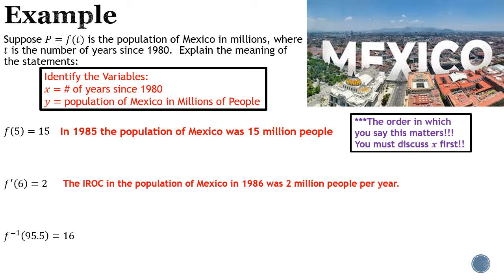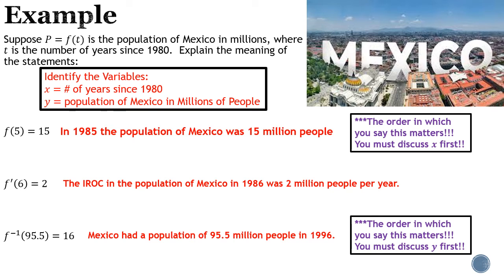Since we're talking about the function (not the derivative), we discuss it in the order the information is given. We see the y value first here, so we talk about y first: 'Mexico had a population of 95.5 million people in 1996.' For the middle derivative example, you talk about y first because it's the change in y over the change in x — slope.